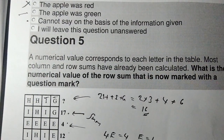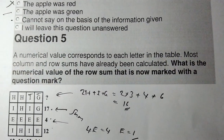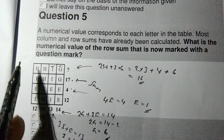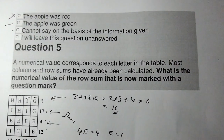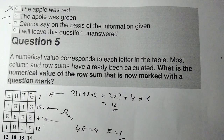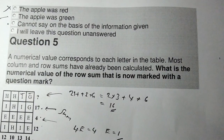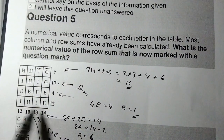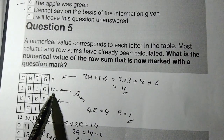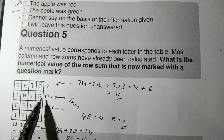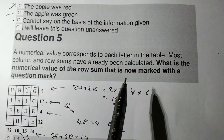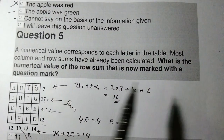We will proceed with question 5. A numerical value corresponds to each letter in the table. Most column and row sums have already been calculated. What is the numerical value of the row sum that is now marked with the question mark?